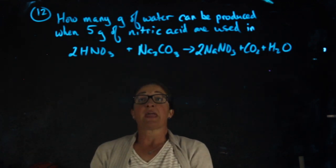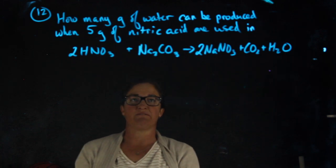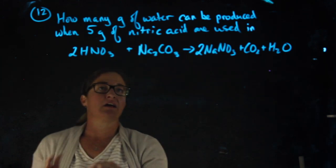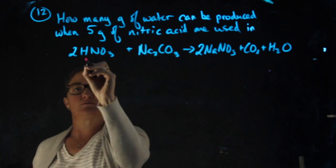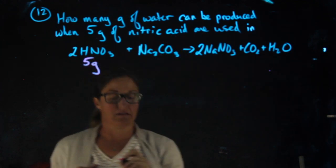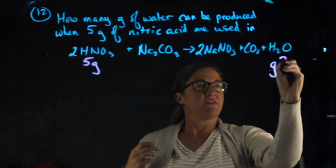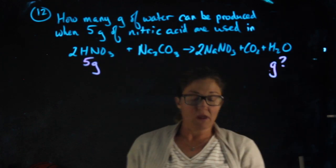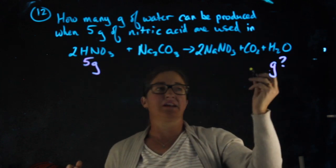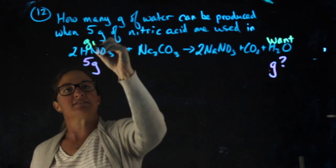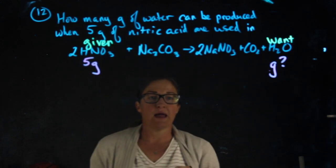Number 12: How many grams of water can be produced when 5 grams of nitric acid are used in the following reaction? Nitric acid is this one, so I have 5 grams of that and I want the grams of water. In terms of thinking, out of want and given, this is my want, this is my given.